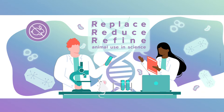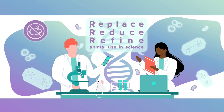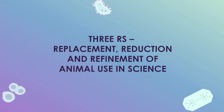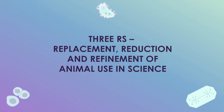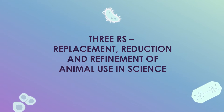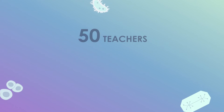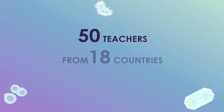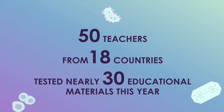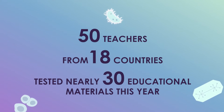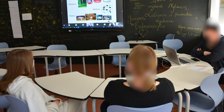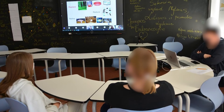The European Commission's Joint Research Centre is working on introducing the principles of the 3Rs – replacement, reduction and refinement of animal use for scientific purposes in primary and secondary education. Teachers across Europe and beyond, coordinated by the European Schoolnet, have tested the newly developed 3Rs learning scenarios and additional resources. In this video, teachers will share their impressions and recommendations from the experience.